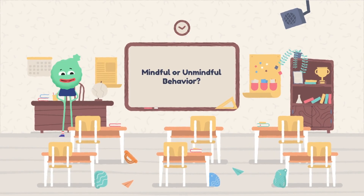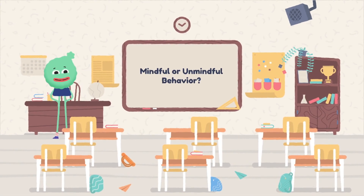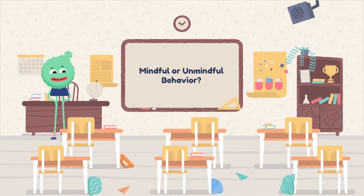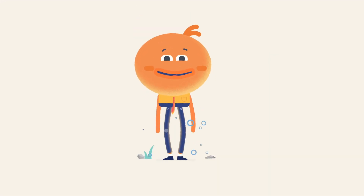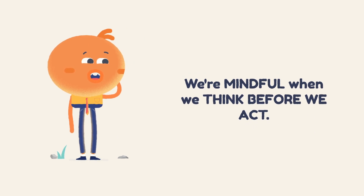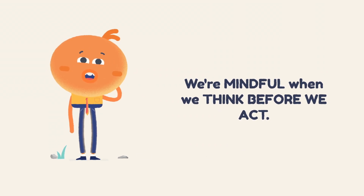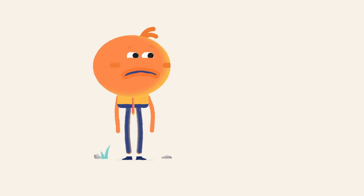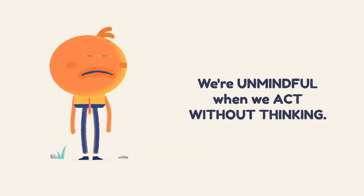On the top of your worksheet you'll notice the heading 'mindful or unmindful.' Your job is to decide whether or not the behaviors listed are mindful behaviors or unmindful behaviors. We are mindful when we think before we act. All three parts of your brain that we learned about in the first lesson — your amygdala, prefrontal cortex, and hippocampus — work together to help you think before you act.